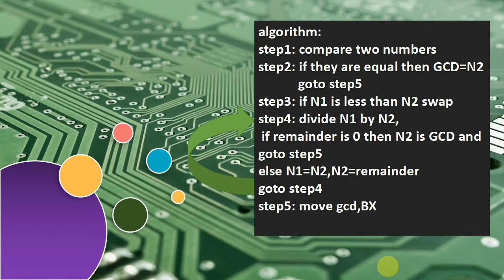This is the logic for how to find the GCD of two numbers. First, we take the two numbers and compare them. If they are equal, then one of the numbers is the GCD, so we take number two as GCD and directly go to step five where we move the result into GCD.